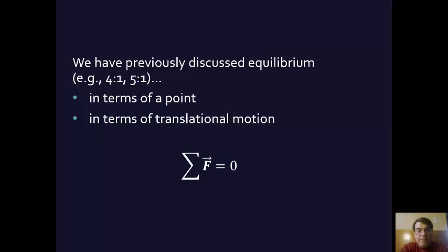So up till now we've discussed back in 4.1, for example, we talked about how a body is at equilibrium, or a point is at equilibrium, if the total net forces, the sum of the forces is zero, and then it's at equilibrium.